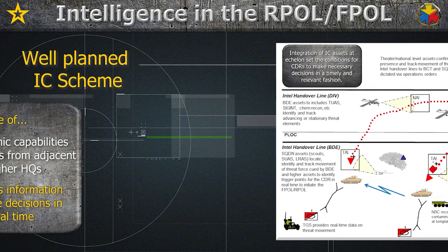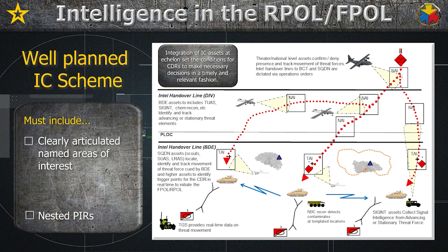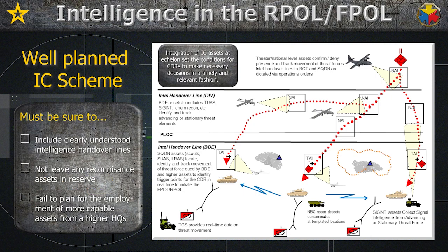Additional care must be given to a well-planned information collection scheme. An in-depth IC plan that makes use of organic capabilities as well as assets from adjacent or higher headquarters is necessary to provide information for real-time decisions. This plan must include clearly articulated named areas of interest informed by high value targets, high payoff targets, and enemy courses of action, as well as nested PIRs to enable the commander to implement the triggers that begin and end the FPOL or RPOL based on observed enemy composition. Intelligence professionals must include clearly understood intelligence handover lines, not leave any reconnaissance assets in reserve, and plan for employment of more capable assets from higher headquarters.